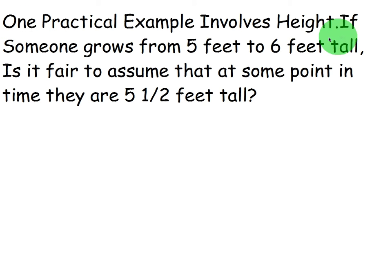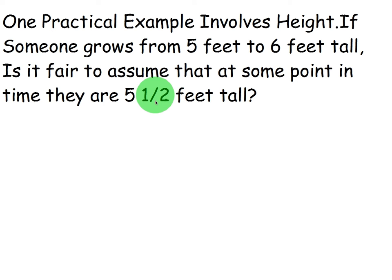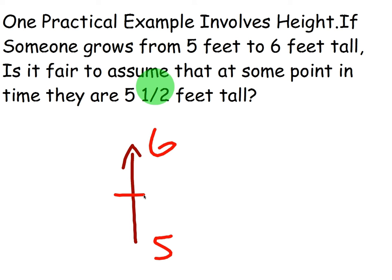A practical example involves height. Let's say a person is 5 feet when they are 12 years old, and by the time they're 15, they're 6 feet tall. The Intermediate Value Theorem would guarantee that at some point in time between age 12 and when they grew to be 6 feet tall — maybe they're 13 or 14 — they were 5 and a half feet tall. Your growth as a human is continuous, and at some point between when they were 5 and 6 feet tall, they were 5 and a half feet tall. So this is a good way of thinking about the Intermediate Value Theorem.